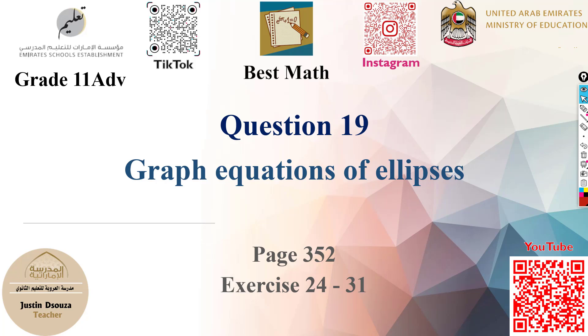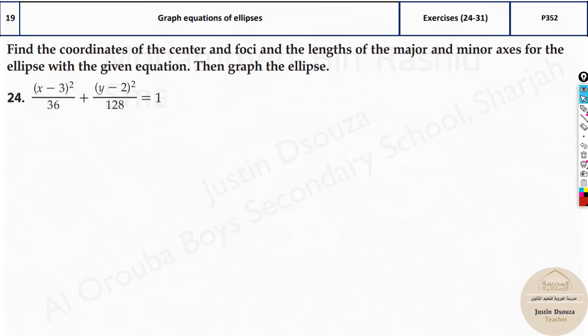Question 19 is to graph ellipses. The equations will be given and you need to graph them out. All the problems are based on vertical orientation, but even if it's horizontal orientation, there is only a little bit of difference. We will solve this problem now.